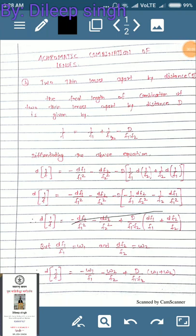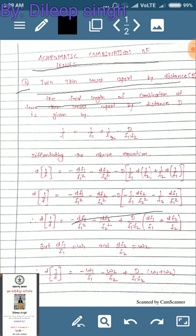In this video we will see a chromatic combination of lenses. In the previous video we covered the same topic but when lenses are in contact with each other. This is Part B, when two lenses are kept apart by a distance D, meaning there is some distance between both lenses. The formula is slightly different here. The focal length of the combination of two thin lenses separated by distance D is given by this equation.